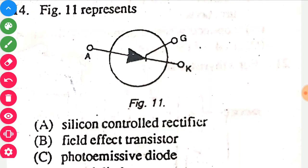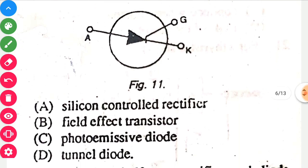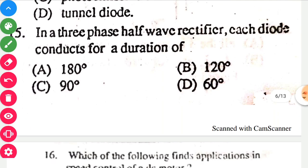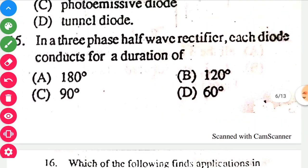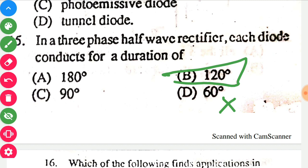Figure 11 represents a Silicon Controlled Rectifier, SCR. Moving towards the next question: in a three-phase half-wave rectifier, each diode conducts for a duration of 120 degrees, so option B is correct. In the answer section they may have written option D, but that is not correct.